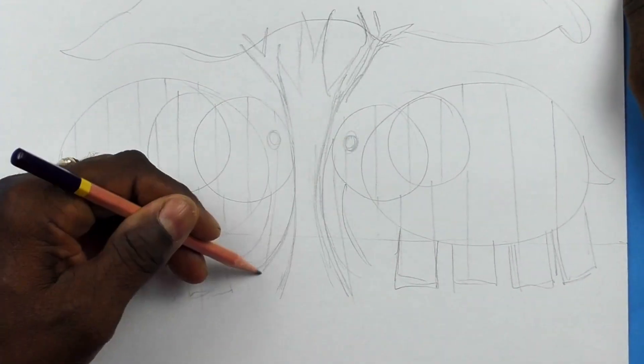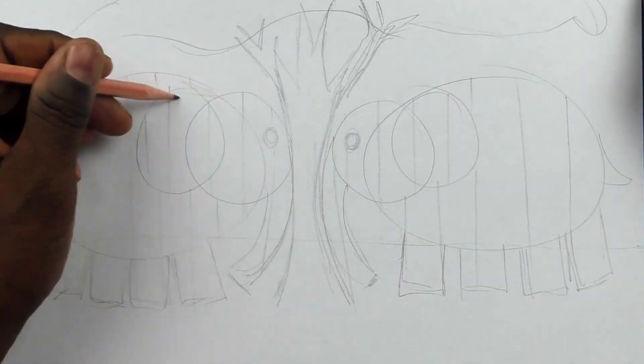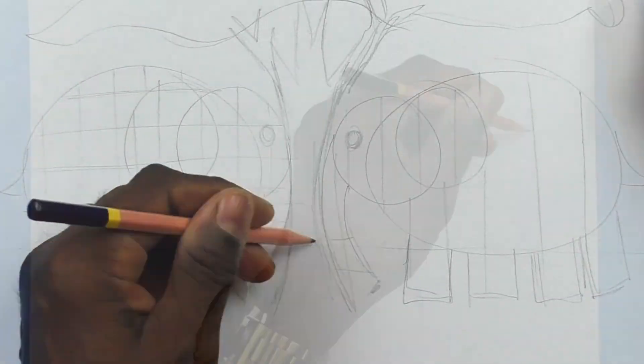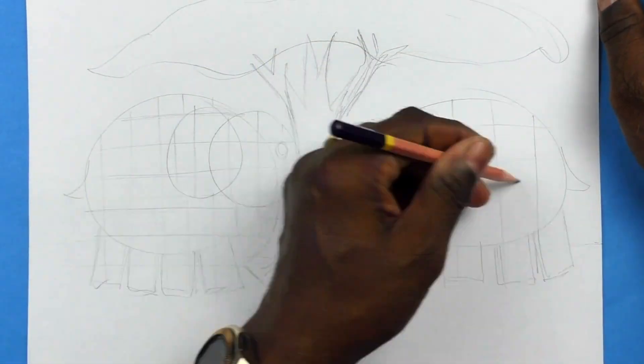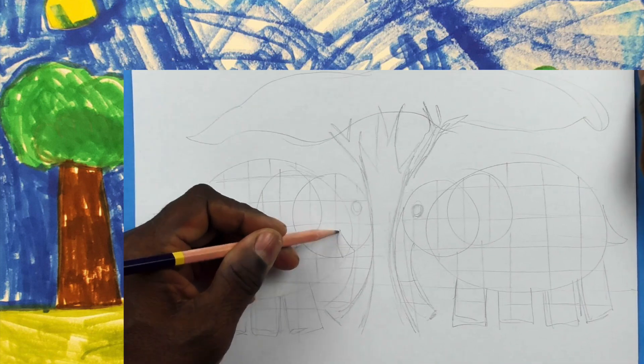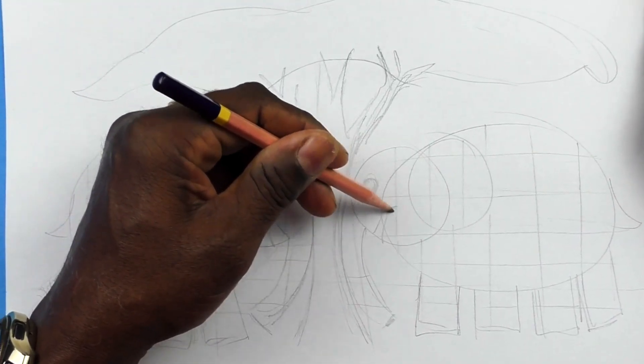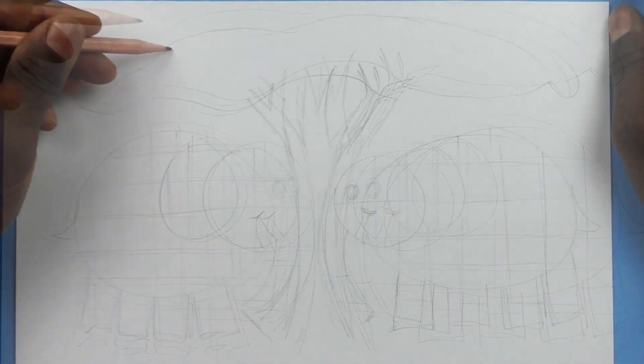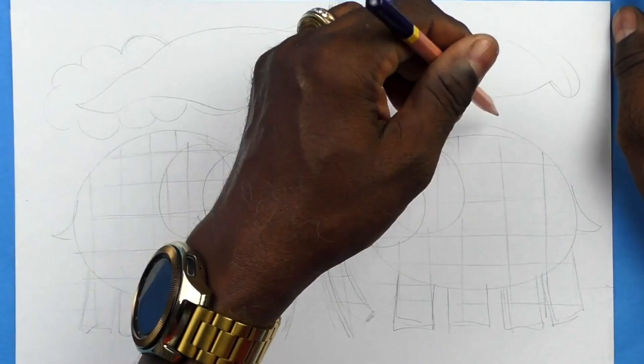And then we're going to make horizontal lines, which will help us to start creating the patchwork which makes Elmer and Wilbur famous. But the one difference about Elmer from Wilbur.